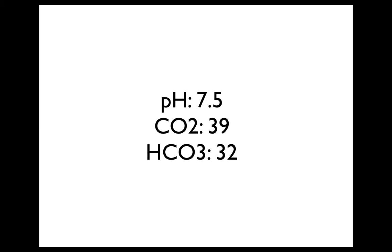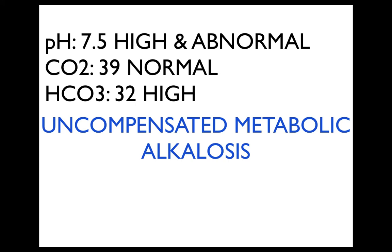What about a pH of 7.5, carbon dioxide of 39, and a bicarb of 32? A pH of 7.5 is abnormally high — this indicates an alkalosis. A CO2 of 39 is within range. A bicarb of 32 is high, also indicating an alkalosis. We know we have a metabolic alkalosis. Our pH is high and abnormal, our carbon dioxide is normal, and our bicarb is high. Because our CO2 is within normal range, we have an uncompensated metabolic alkalosis.